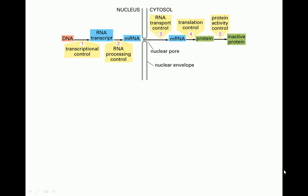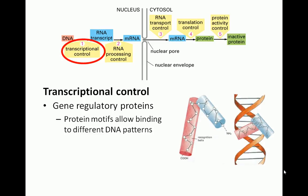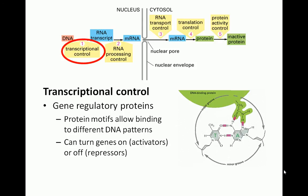Gene regulation can occur at many stages in the process of going from DNA to protein. Transcriptional control is the most efficient form of gene regulation in terms of energy because it controls the very first process in the sequence. The cell uses gene regulatory proteins to exert transcriptional control. These proteins have certain structural patterns, or motifs, that allow them to bind to different DNA patterns, which allows them to turn genes on or off.